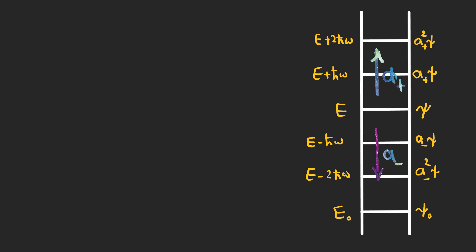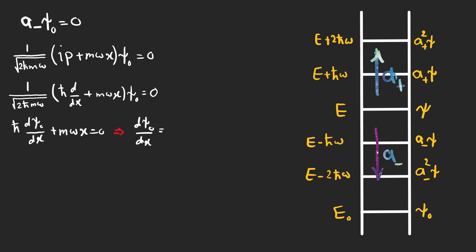Let's find the ground state. If the lowering operator acts on the ground state, it must yield zero. So, we can write this equation like this. And the expression in the parenthesis must yield zero. What we need to do is to solve this differential equation and find psi zero.